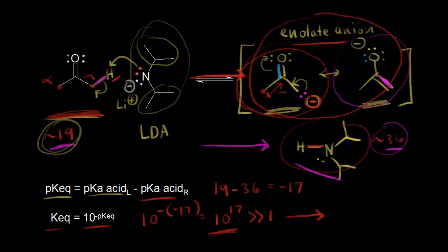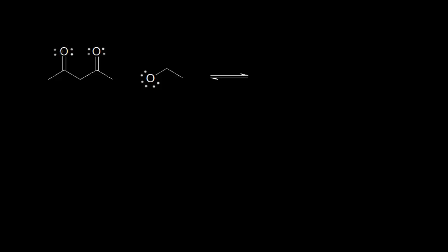Here's an example of a very acidic ketone — a special kind called a beta-diketone. If we look for alpha carbons — the carbons next to each carbonyl — this is an alpha carbon, this is an alpha carbon, and this is an alpha carbon. The most acidic protons are on the alpha carbon in the center, between our two carbonyls, and there are two alpha protons on that carbon. The pKa for one of those acidic protons is about nine, which is much more acidic than acetone or acetaldehyde.